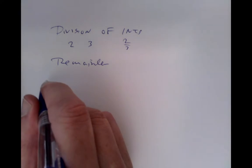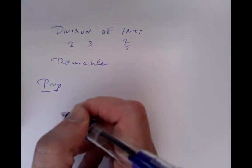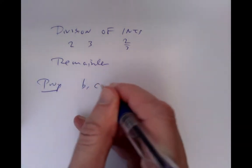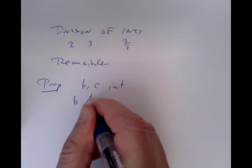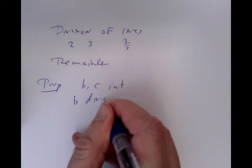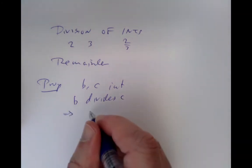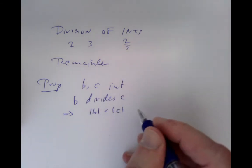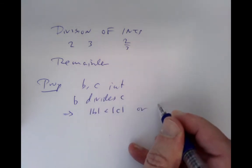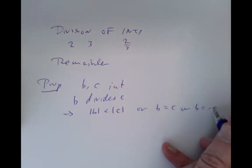The first observation we want to make is a proposition: if b and c are integers, and if b divides c, then that implies that either the absolute value of b is less than that of c, or b equals c, or b equals minus c.